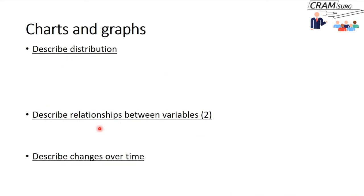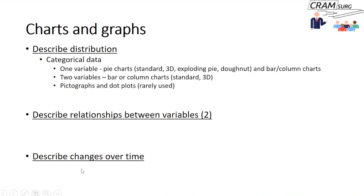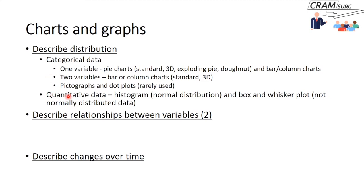If you're describing distribution, think about the data type. For categorical data with one variable, use pie charts or bar/column charts. For two variables, use a bar or column chart — you can't use a pie chart for two variables. For quantitative data, if it's normally distributed use a histogram; if it's not normally distributed, use a box and whisker plot.